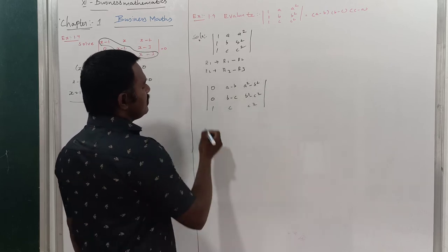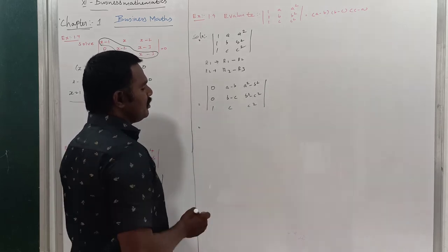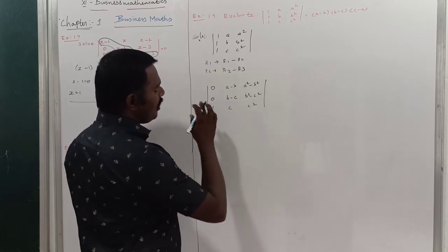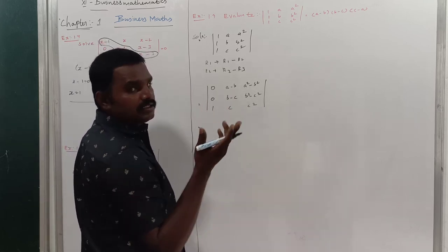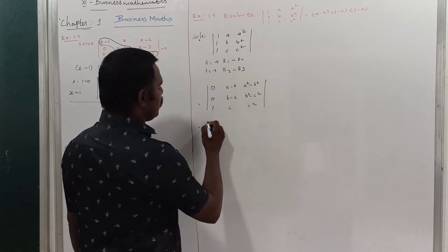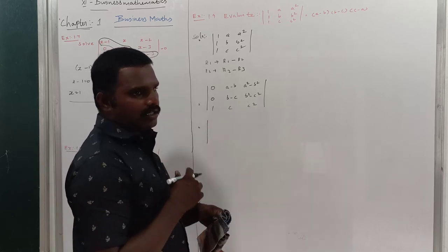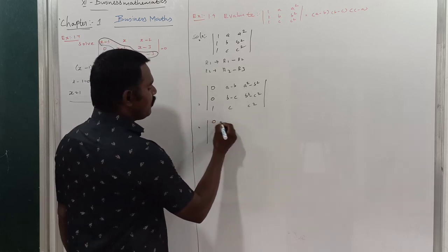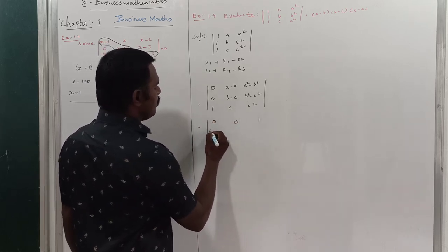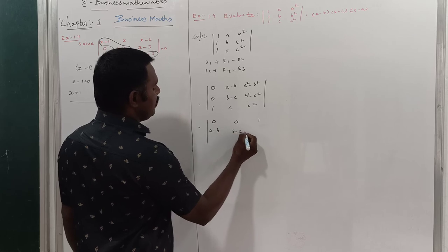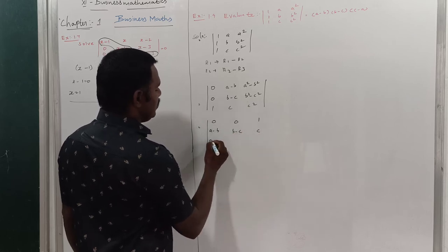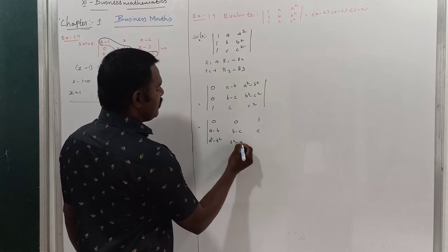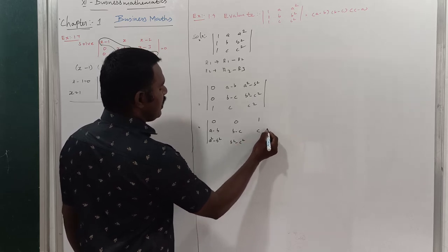This operation is valid for determinants alone — you can interchange rows and columns without changing the value. So the resulting determinant has rows: [0, A−B, A²−B²]; [0, B−C, B²−C²]; [1, C, C²].